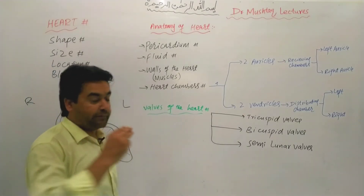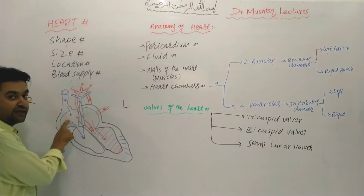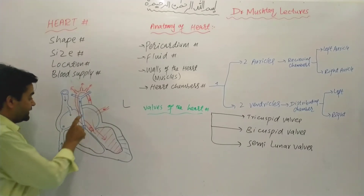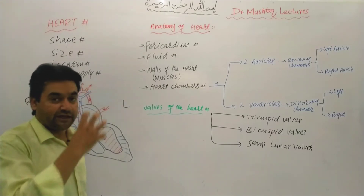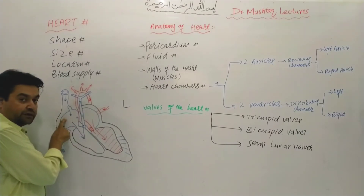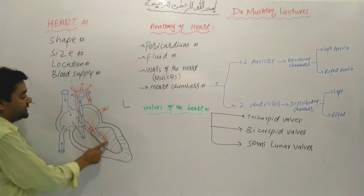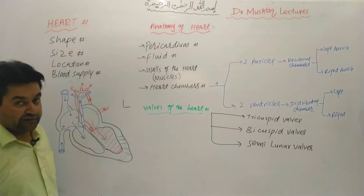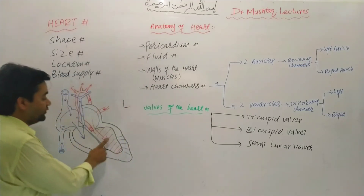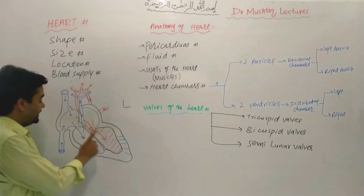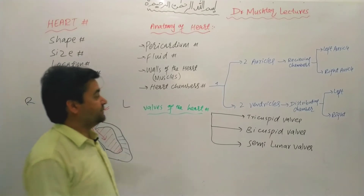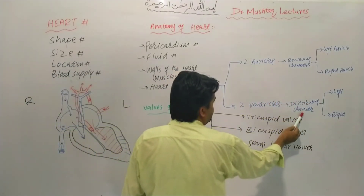The heart chambers are: the Atrium and the Ventricle. The Atria are the receiving chambers — the right atrium receives deoxygenated blood and the left atrium receives oxygenated blood from the lungs. The ventricles — right and left — are the distributing chambers responsible for blood distribution.